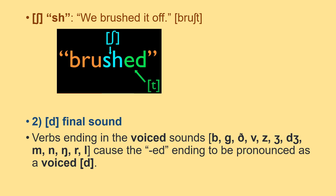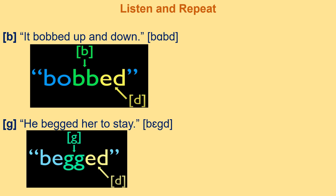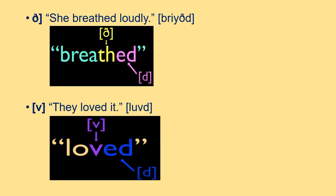Rule 2 — /d/ final sound: verbs ending in voiced sounds like /b/, /g/, /d/, /v/, /z/, /m/, /n/, /r/ cause the -ed ending to be pronounced as a voiced /d/. Listen and repeat: 'It bobbed up and down' — bobbed. 'He begged her to stay' — begged. 'They loved it' — loved.